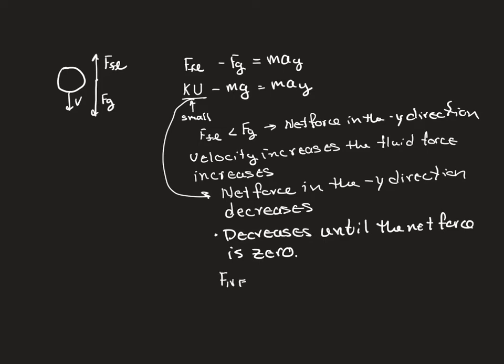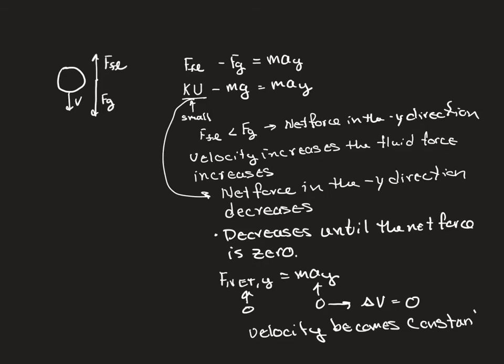so remember net force in the y direction is going to equal mass times acceleration of the y. So when this is zero, mass is not zero. The object is still there. It's still present. It still has mass. So that must make this term, the acceleration in the y direction, zero. And when you're no longer accelerating, your change of velocity equals zero. So the velocity becomes constant.